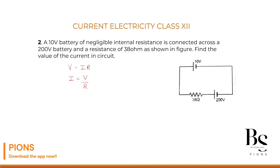To find the value of current, we first need to find what is the voltage across the whole circuit, because there are two batteries. Let's visualize this: our 10 volt battery has its positive terminal connected to the positive terminal of the 200 volt battery.